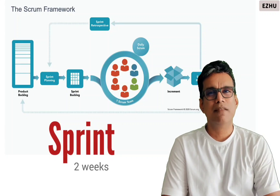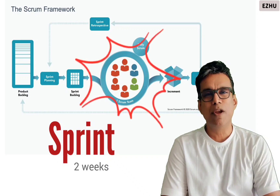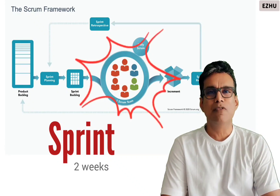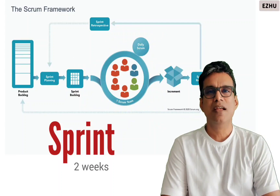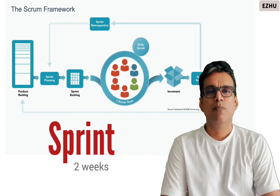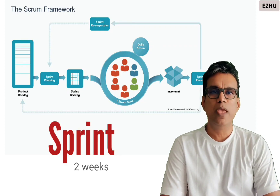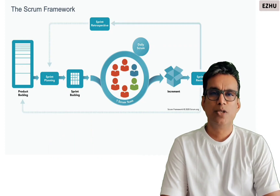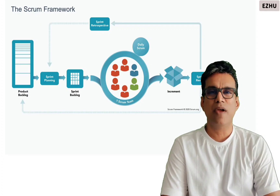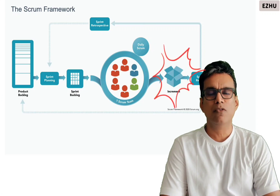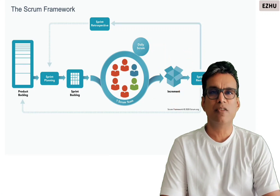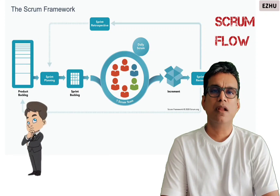A sprint, by its name, implies intensity for a short period of time where the entire team puts all their best efforts and sees what they have achieved at the end. A sprint is typically a one-week, two-week, or four-week period — a short period where certain features finalized by the product owner are taken up and the team develops and rolls out those features in an incremental fashion.